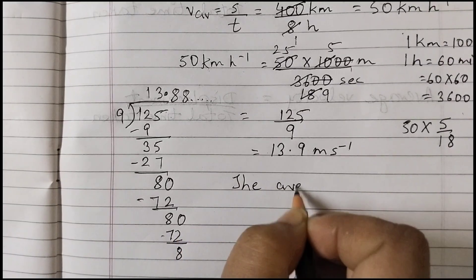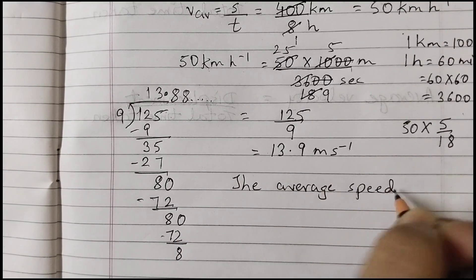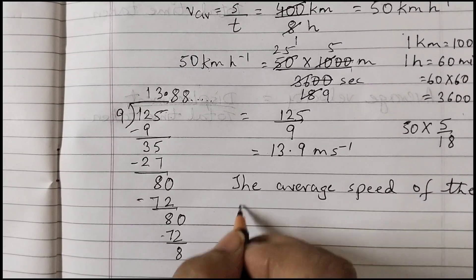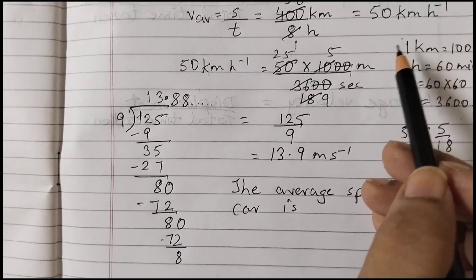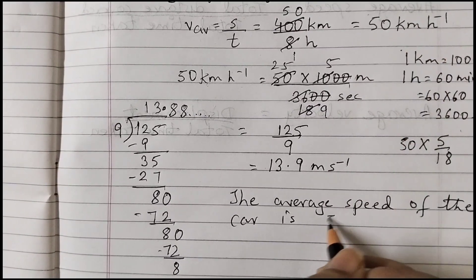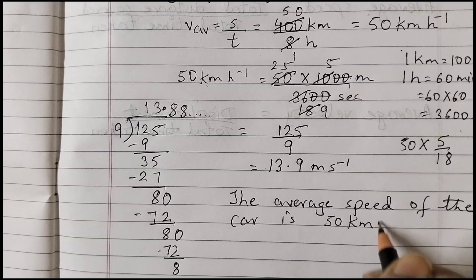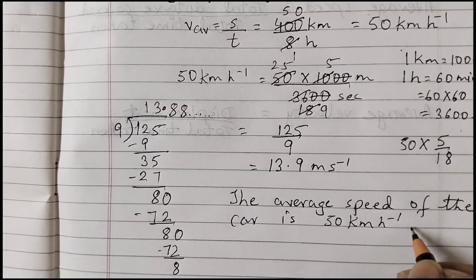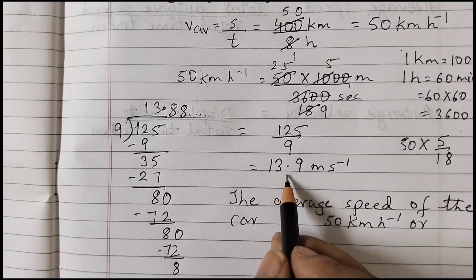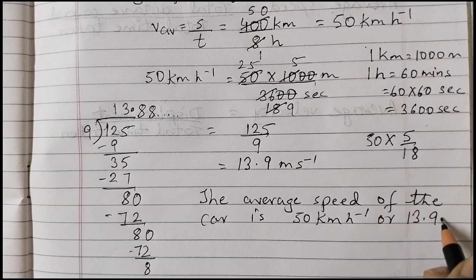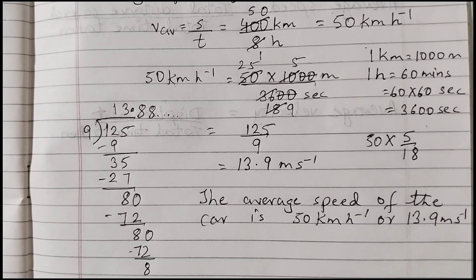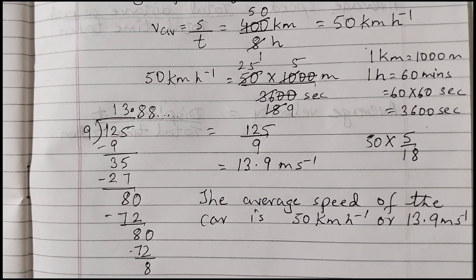The average speed of the car is 50 kilometers per hour or 13.9 meters per second. That was example number 7.2. In the next video we will do example number 7.3.